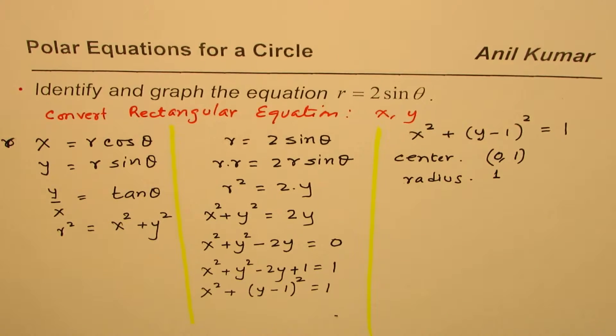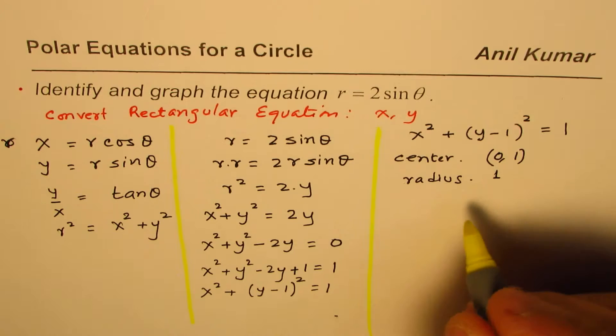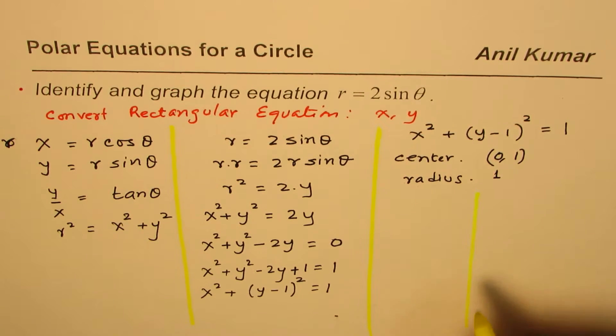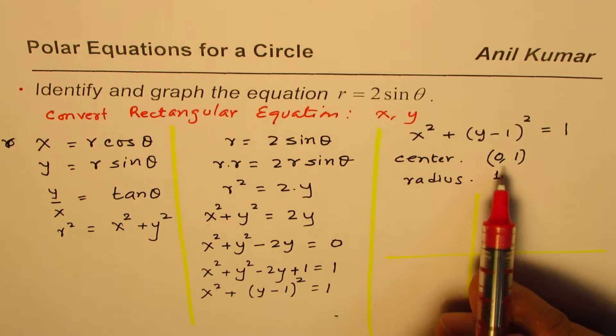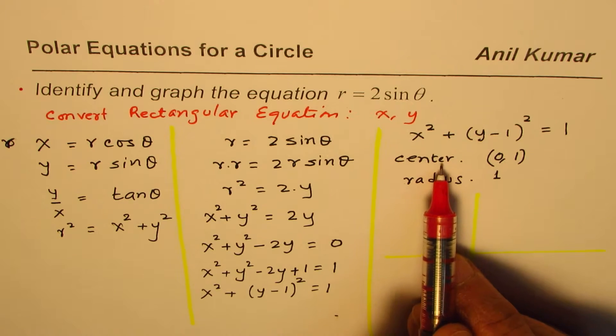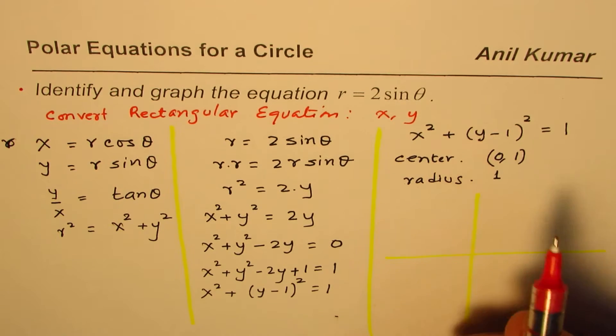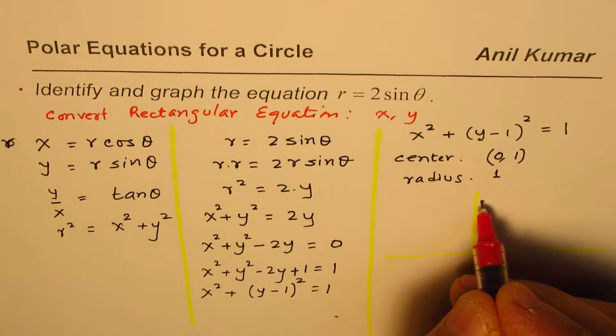That is the circle. Now we can actually sketch this circle. So that is how we could graph such a polar equation by converting it to the rectangular form. The circle here has moved or translated to the point 0, 1 as the center. That is to say 1 unit up.